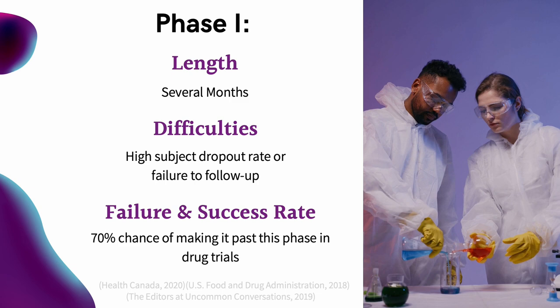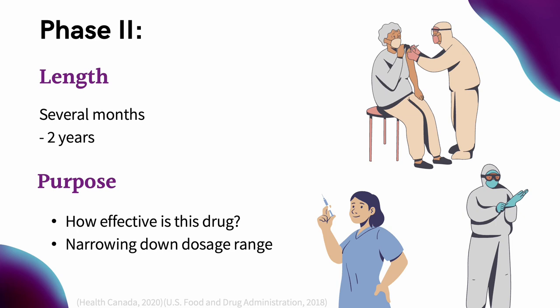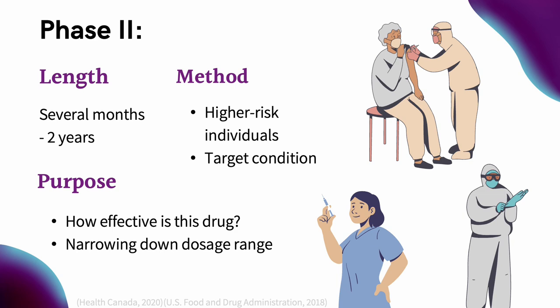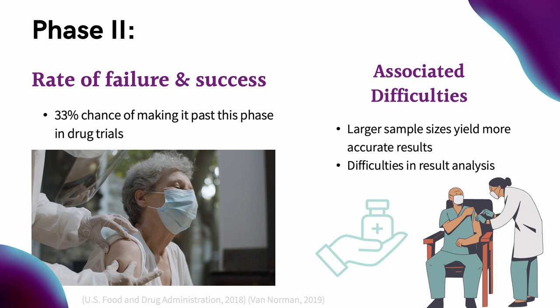Moving on to Phase 2. The FDA reports an average length of several months to 2 years. Phase 2's purpose is to determine how effective the drug is and narrow down the most appropriate dosage. To reach that goal, this phase uses a sample size of up to several hundred participants who are at higher risk with a targeted condition. Phase 2 has an approximate success rate of 33%, and researchers may have difficulties in result analysis because of the small sample size.